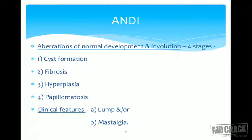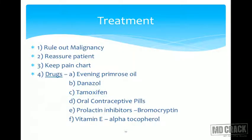Next is the important entity ANDI — Aberrations of Normal Development and Involution. It goes in four stages: first is cyst formation, second is fibrosis, third is hyperplasia, and fourth is papillomatosis. Clinically, patients present with either a lump in the breast or pain in the breast. The treatment approach should recognize that these are aberrations and not necessarily disease. Most importantly, in an elderly female presenting with ANDI, one must rule out malignancy.